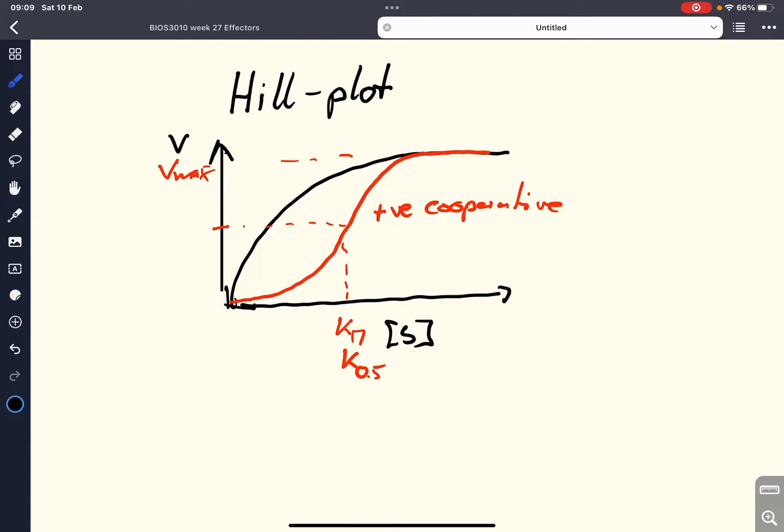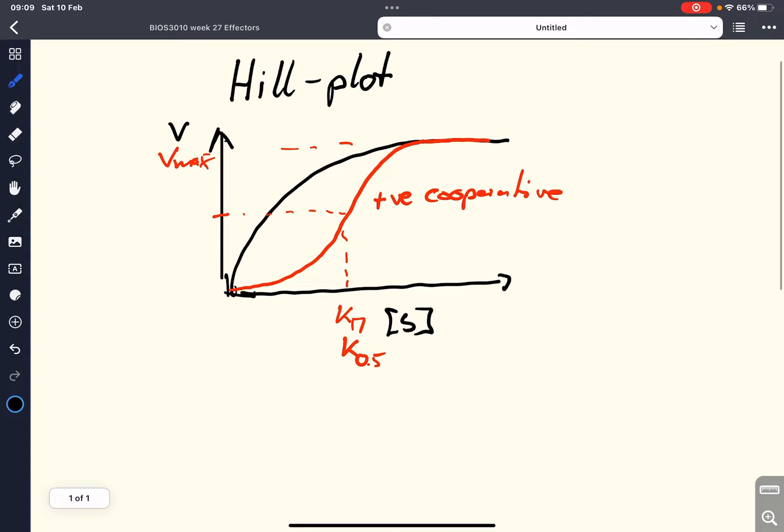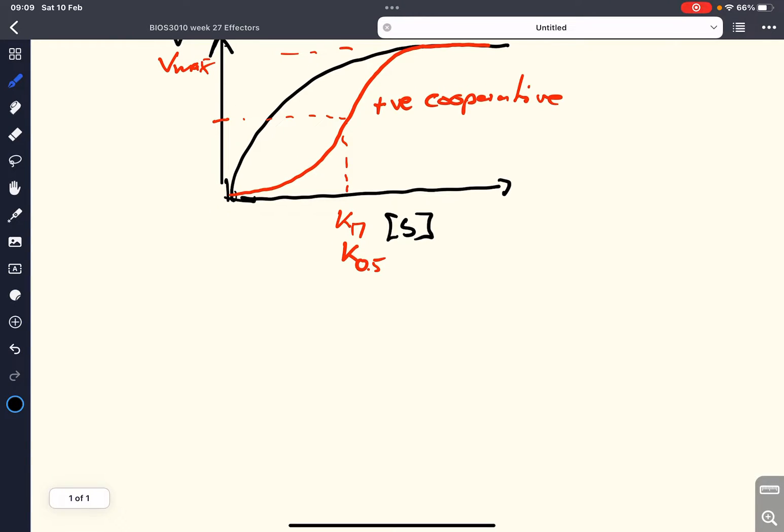And more to the point, how do we find out this cooperativity? So the trick is basically to rewrite the Michaelis-Menten equation. So we have V equals Vmax times S over Km plus S. That's our standard hyperbolic Michaelis-Menten equation that gives us the black curve in this graph.